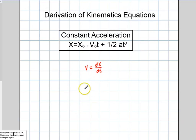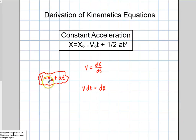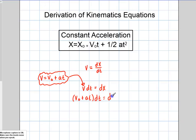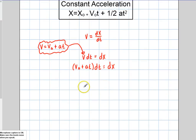Basically what I'm going to do is separate these variables first. So I'm going to have v times dt equals dx. But the problem is I don't have acceleration yet. Remember, we just did a derivation of v equals v₀ plus at. So I'm going to use that equation and plug it in here, expanding this function to include v initial and acceleration. So now I'm going to have v initial plus acceleration times time, dt equals dx.